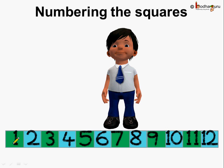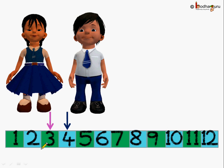He started putting numbers on all the squares. Look, he put the numbers 1, 2, 3, 4, 5, 6, 7, 8, 9, 10, 11, 12 on the squares.